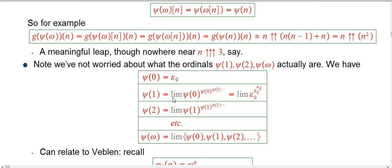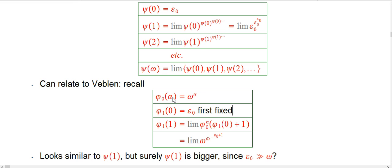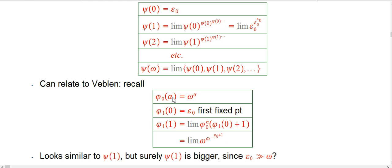What about Veblen? We can relate this to Veblen. I'll do a little bit of relating to Veblen for now, and then probably not say as much about the comparison later since this is its own thing. Remember, the Veblen functions started out with phi naught being super crucial — the generator of omega to the alpha. Then phi 1 of 0 was epsilon naught, the first fixed point of phi naught. And phi 1 of 1 is the second fixed point of phi naught, obtained by starting with epsilon naught, adding 1 to escape the fixed point trap, and then iterating the omega exponentiation machine.